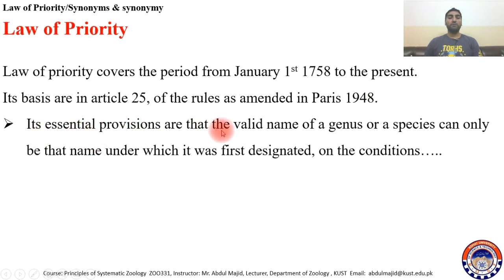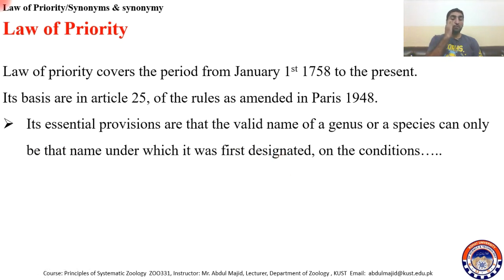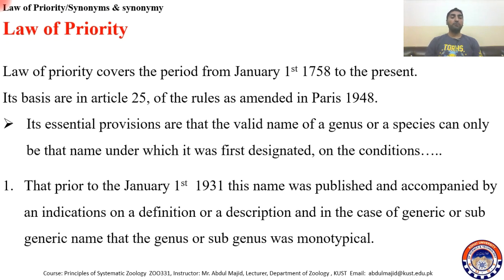The essential provisions are that the valid name of a genus or a species can only be the name which was first designated, but on certain conditions. Condition one: prior to January 1st, 1931, this name was published and accompanied by an indication, a definition, or a description.